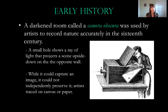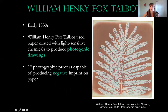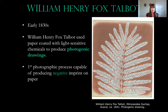The camera obscura is a precursor to photography — artists would use it to reflect light into a box and then actually trace something using the reflected image, so it's closer to reality but still not an actual imprint. A small hole shows a ray of light that projects a scene upside down on the opposite wall. It could capture the image but could not preserve it the way a photograph could.